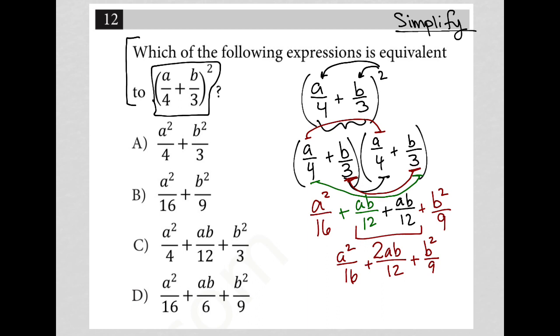Now my middle term can be reduced because I have this two that goes into itself once and this two that goes into 12 six times. So what I'm left with is a squared over 16 plus ab over six plus b squared over nine.